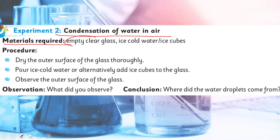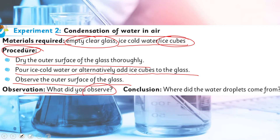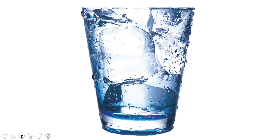The material required is an empty clear glass and ice cold water or ice cubes. The procedure: dry the outer surface of the glass thoroughly, pour ice cold water or alternatively add ice cubes to the glass, then observe the outer surface of the glass. Observation: what did you observe? Conclusion: where did the water droplets come from? Here you can see a glass full of cold water and ice, and small droplets of water on the outside surface of the glass.